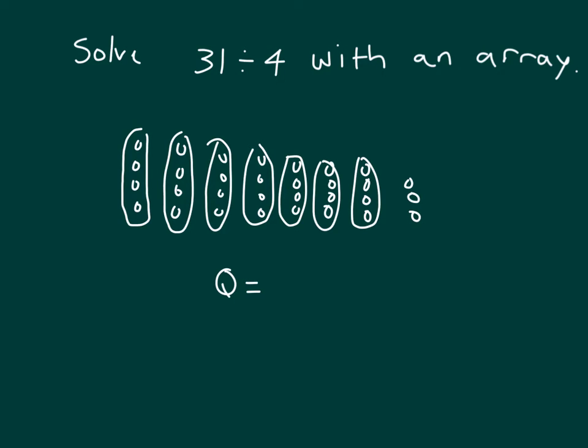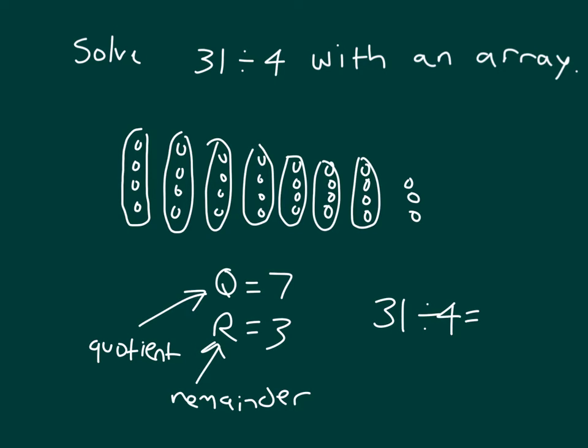And then so our quotient is 1, 2, 3, 4, 5, 6, 7. And our remainder is 3. So this was our quotient, and this was our remainder. Sometimes I've seen it written like this. 31 divided by 4 equals 7 with a remainder of 3. This remainder, that's what we could not put into another group of 4. So that's solving that division problem using an array.